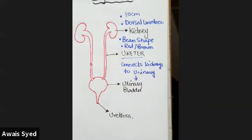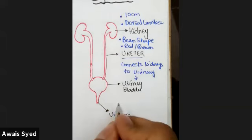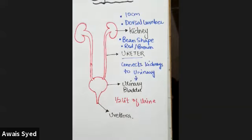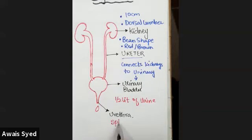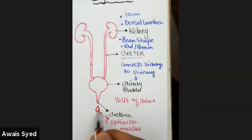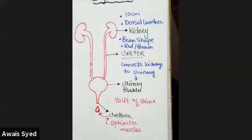If we talk about the urinary bladder, the urinary bladder can carry around half a liter of urine. The urinary bladder has sphincter muscles which control the closing and opening. So the release of urine is controlled by the urinary bladder through these sphincter muscles.